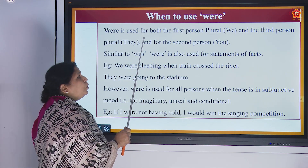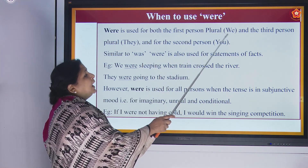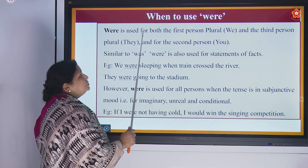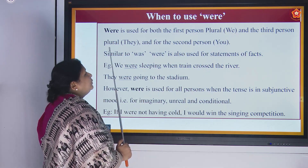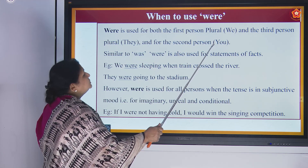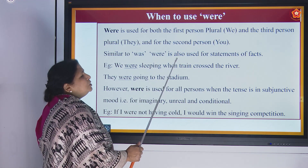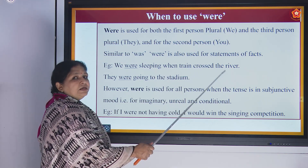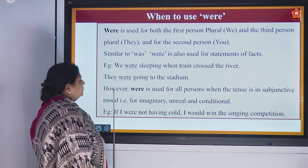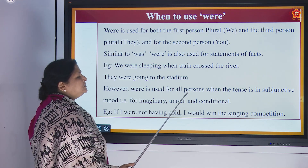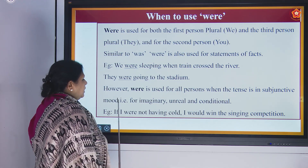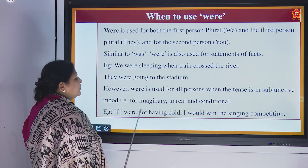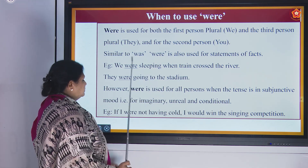Were is used for both the first person plural — we — and third person plural — they — and for the second person — you. Were is also used for statements of facts. Example: 'We were sleeping when the train crossed the river.' 'They were going to the stadium.' However, were is used for all persons when the tense is in subjunctive mood — that is, for imaginary, unreal, and conditional statements. Example: 'If I were not having cold, I would win the singing competition.'